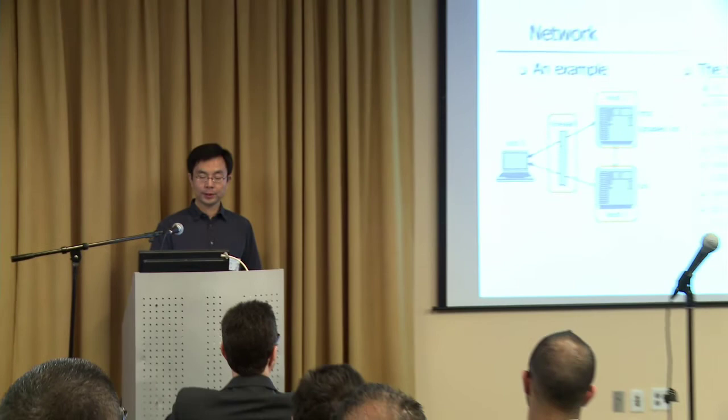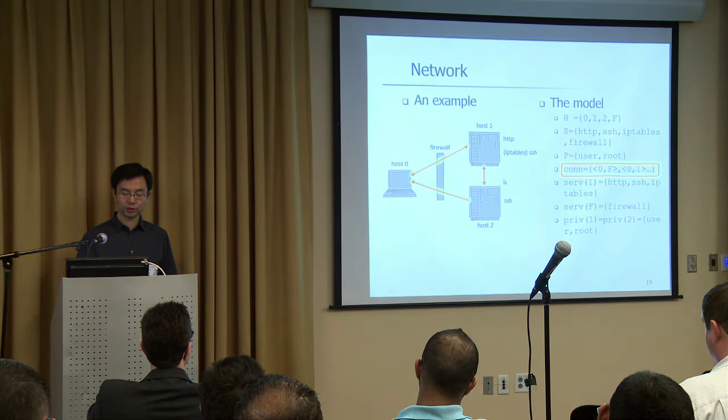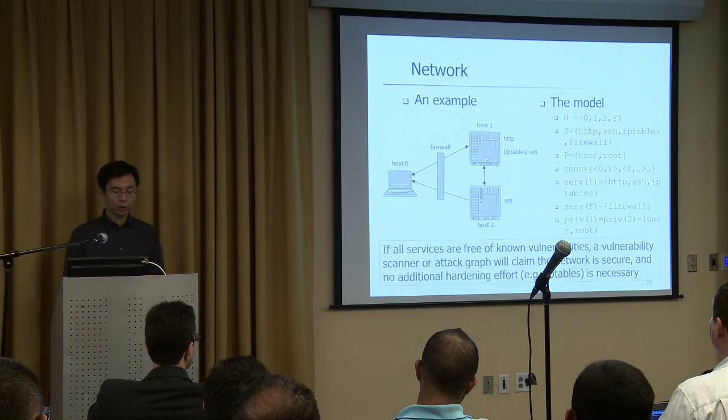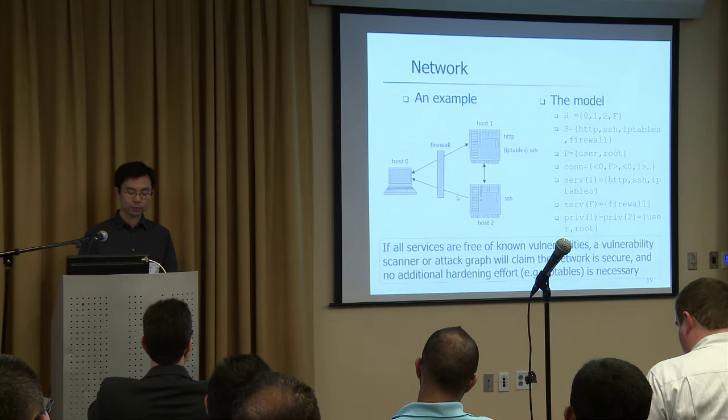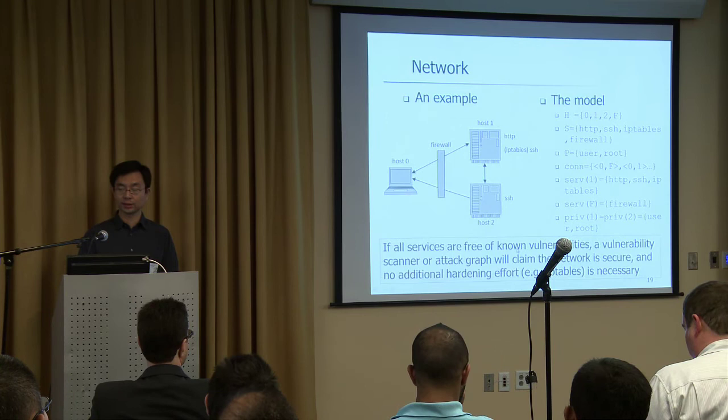I will not talk about the formal model here, just go through a small example. We have a very tiny network composed of an internal network with just two hosts, behind a firewall, and a host outside. Our model includes the hosts, the services running on each host, the connectivities, and the relationships between those services. Now, let's think about this question: with this tiny network, if we assume all services running on each host are free of any known vulnerabilities — we have run the scanning and found nothing, it's absolutely secure.